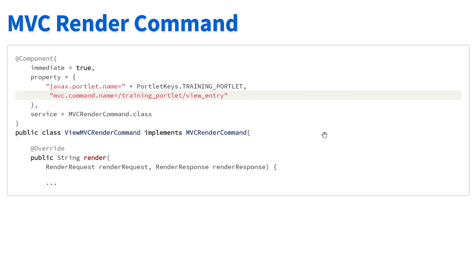Once that parameter is passed, we create an MVC Render Command — just like everything else in Liferay, this is implemented as a component. We create a class that implements the MVC Render Command interface and define a couple of properties. The first property specifies which portlet we're listening to — in this case, the training portlet. The second property, the MVC command name, specifies what parameter we're listening for, such as /training-portlet/view-entry. When a render URL is invoked with that value, this component receives that parameter and the render method is invoked, rendering a specific JSP.